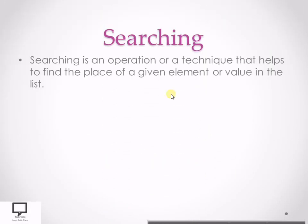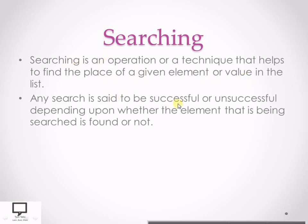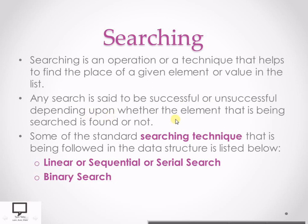Searching is an operation or technique that helps to find the place of a given element or value in a given list. We must have the list, and we must have the key element — the element we want to search. Any search is said to be successful or unsuccessful depending on whether the key element is found or not. If the key element is found, the search is successful; if not, it is unsuccessful. Some standard searching techniques in data structures include linear search, sequential search, or serial search.